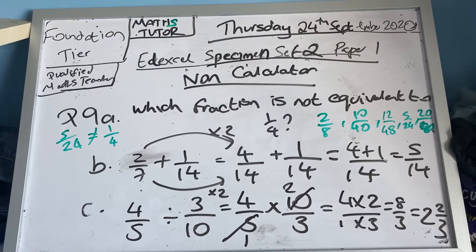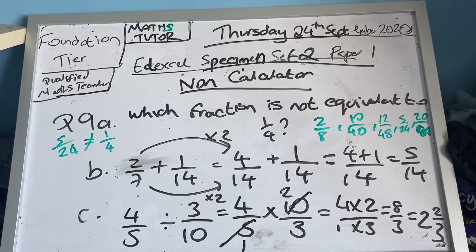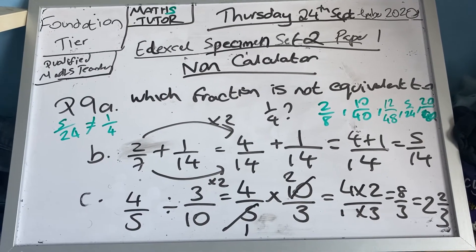Which is four plus one over fourteen, which is five over fourteen.